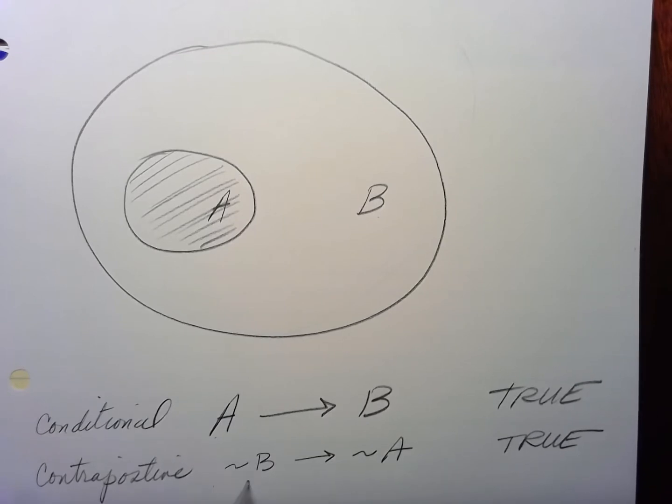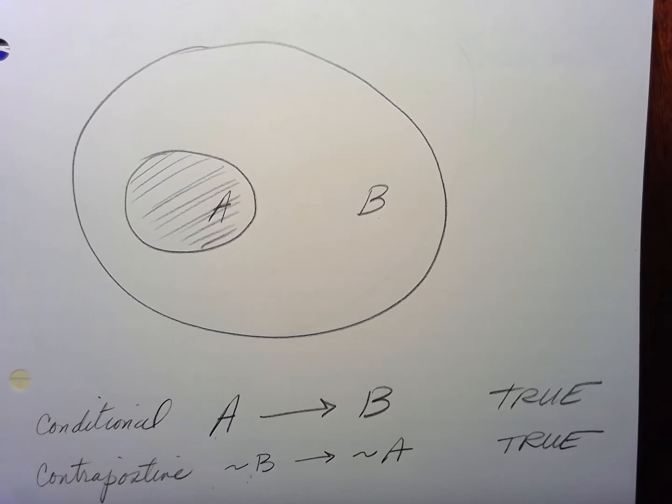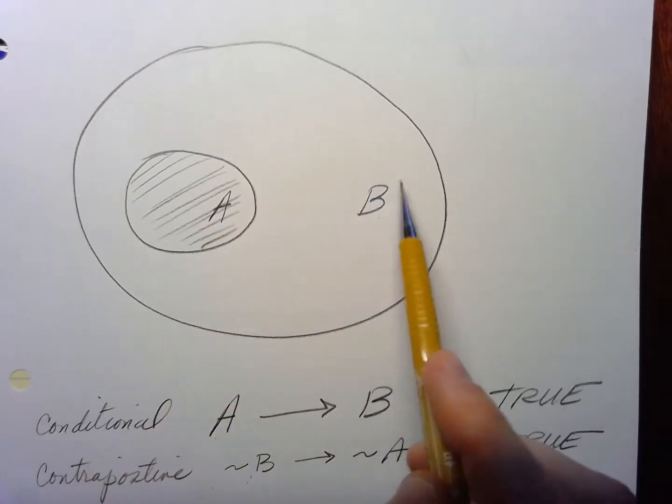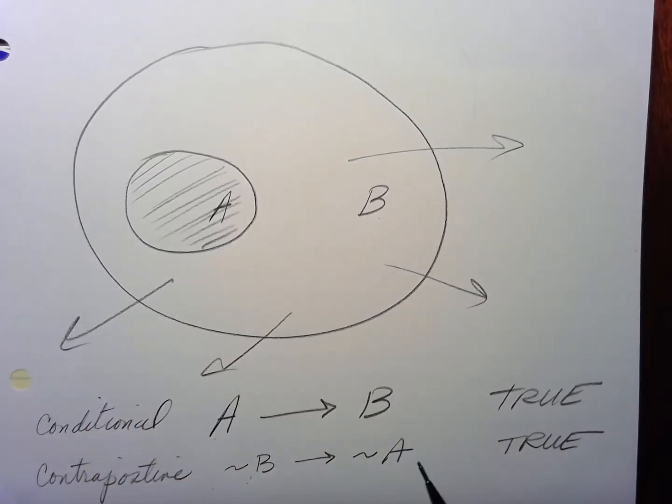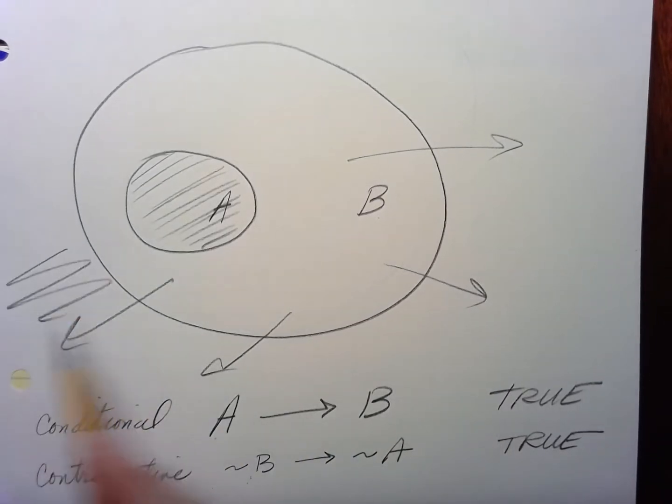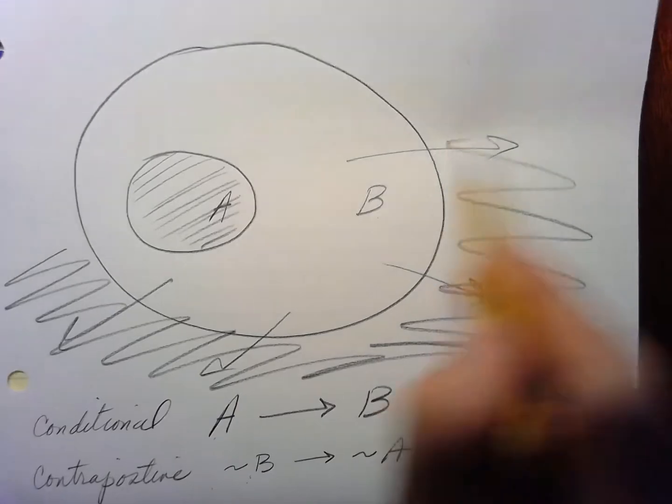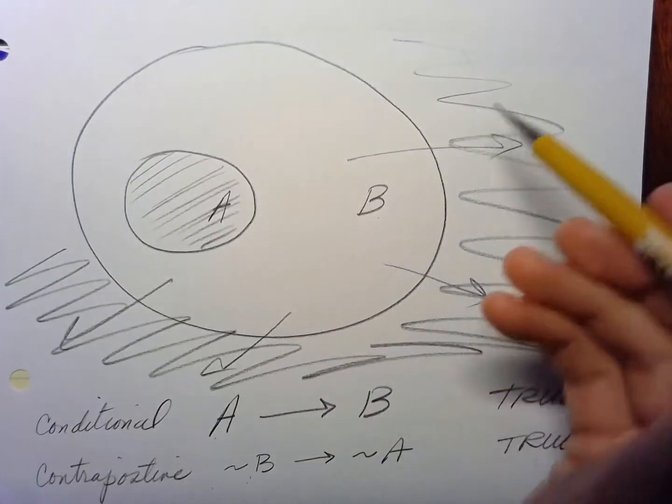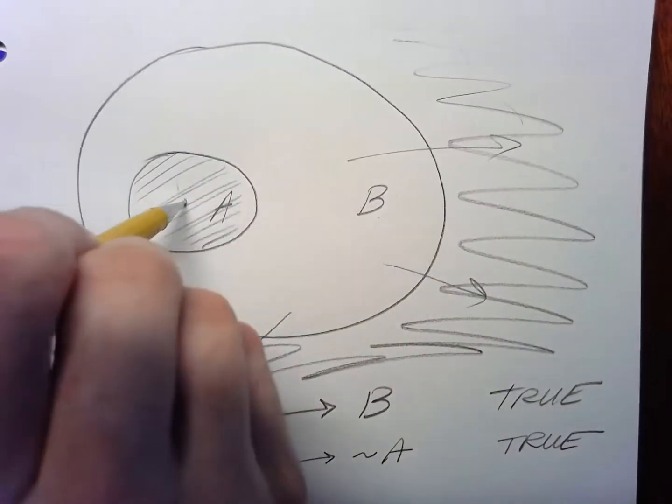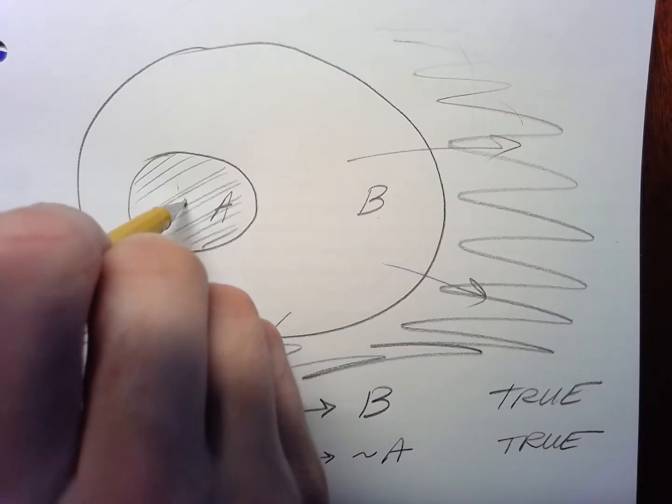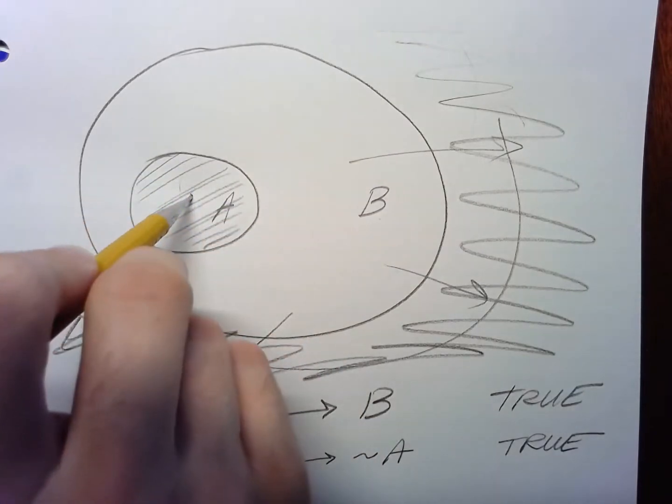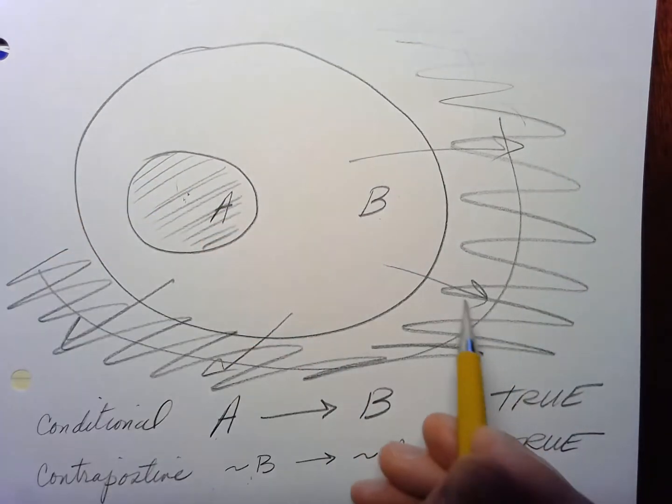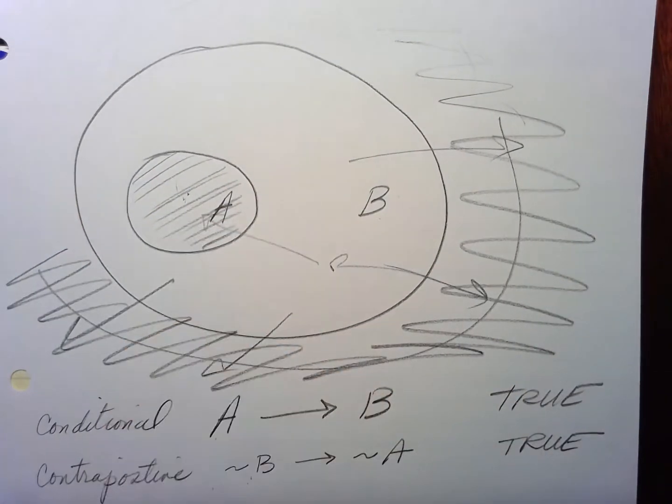Now, so if it's not in B, if it's not in B, then it is outside, it's outside of this circle, the B circle, right? And if it's somewhere out here, somewhere not inside of B, then there's no way that it can be back in A. So if it's not in B, then it certainly is not in A, because it has to be back in here to even be back in there.